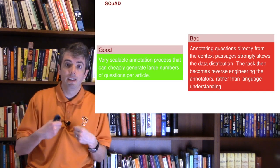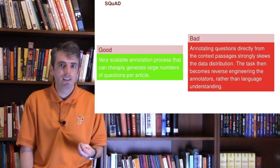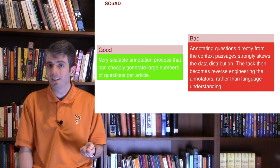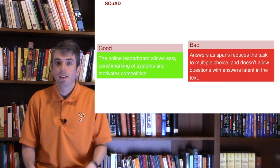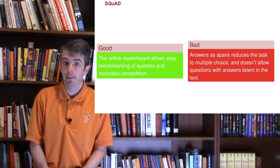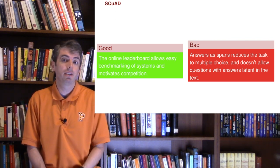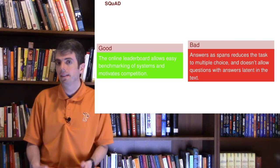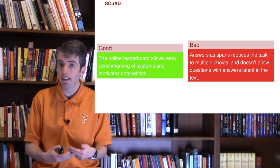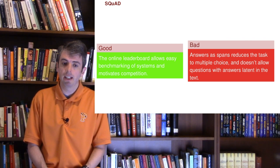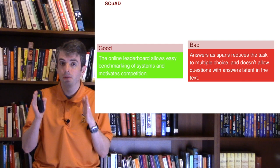The downside of this is that these crowd workers can often be reverse engineered. There are tricks and cheats that they use to create questions really quickly. A lot of the machine learning algorithms are essentially reverse engineering those annotators rather than solving the intrinsic problem. The reason that SQuAD has become the gold standard is that it has a very well-trafficked leaderboard where people can submit their systems to see how they stack up against the rest of the world. Because the answers are spans within the original document, this reduces the task to multiple choice, much like the Daily Mail CNN dataset that we talked about at the very beginning.